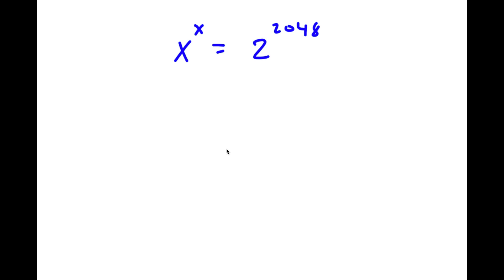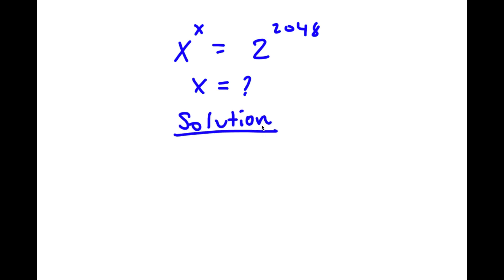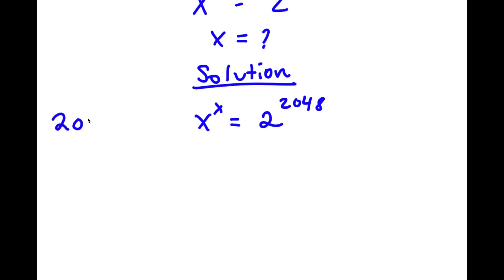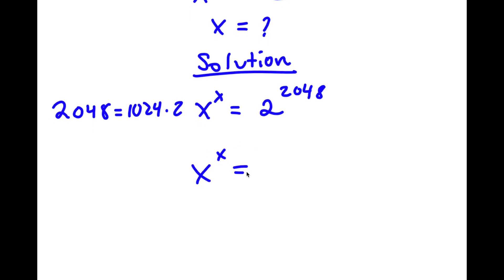Alright guys, welcome back to Clicker Dynamics. In today's video I'm going to be teaching you how to solve this exponential equation. I have x to the power of x is equal to 2 to the power of 2048. I want to find the value of x. For my solution, I first start with x to the power of x is equal to 2 to the power of 2048. Now 2048 is the same thing as 1024 times 2, so I'm going to replace 2048 with 1024 times 2.